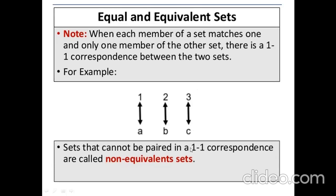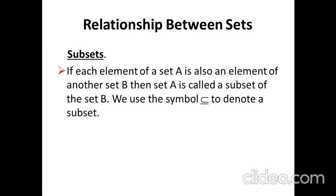Sets that cannot be paired in one-to-one correspondence are called non-equivalent sets. The next relationship is subsets. If each element of set A is also an element of another set B, then set A is called a subset of set B. For subset, we use a specific symbol.